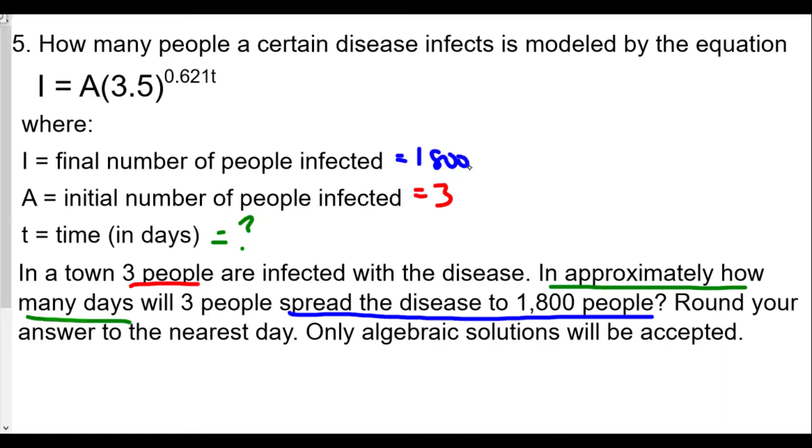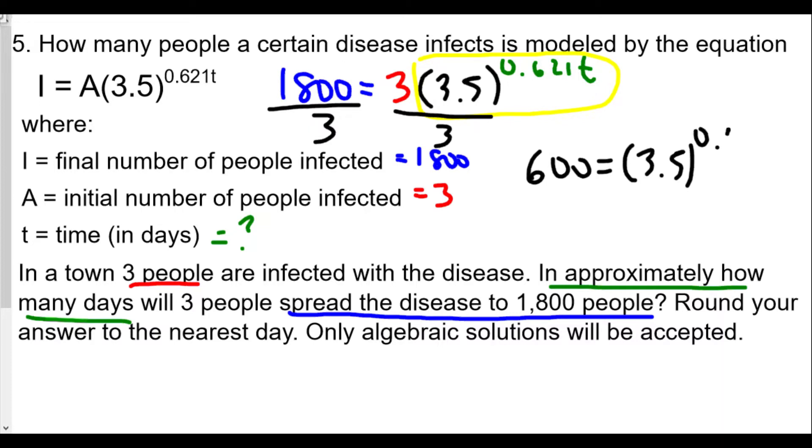We're going to come up with our equation now using our model. So we'll have I = 1,800 equals A, which is 3, times 3.5 raised to the 0.621t. That by itself will give you some credit for this question because you're able to plug in the correct values into the correct places. Now we want to isolate this part of the equation to get 3.5^(0.621t) by itself, so we're going to divide both sides by 3, and we'll get 600 = 3.5^(0.621t).